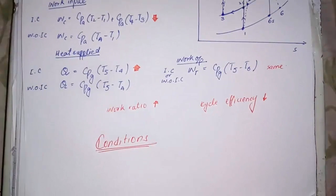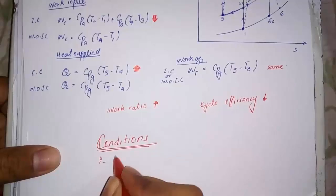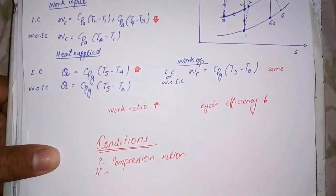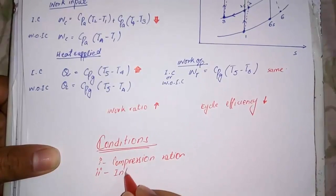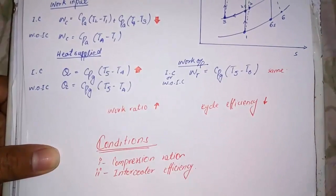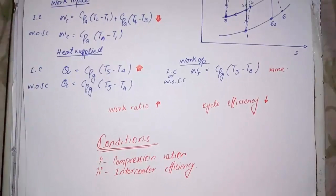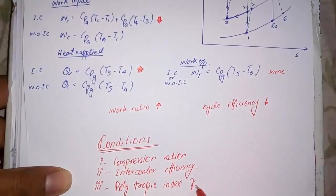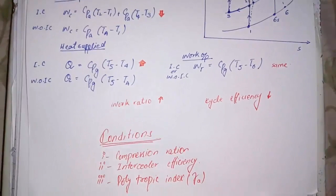To use this method to improve the gas power plant, there are three conditions. First is compression ratio must be same in each compressor. Second is intercooler must be 100% efficient, means it must make the temperature which was at the inlet of the compressor after each stage. Third is polytropic index gamma must be same for each stage.